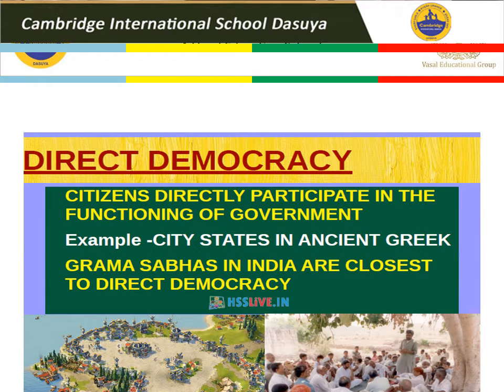In direct democracy, citizens directly participate in the functioning of the government, like in the city-states of ancient Greece. The gram sabhas in India are closest to direct democracy, where we ourselves choose our MLAs and MCs.